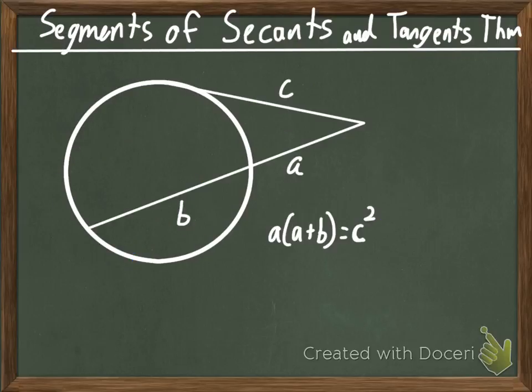Finally, we have the segments of secants and tangents theorem. So, in this theorem, we have a tangent and a secant that come from an external point. Our secant is broken up into A and B, where A is the external part. And then we have our tangent C. This is similar to our previous theorem,